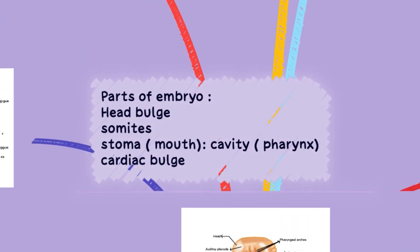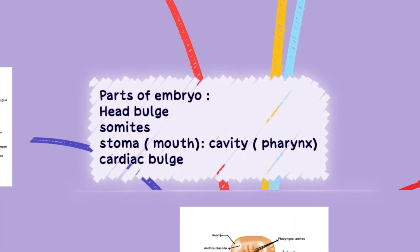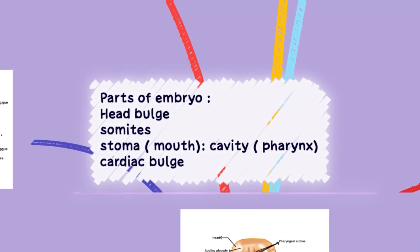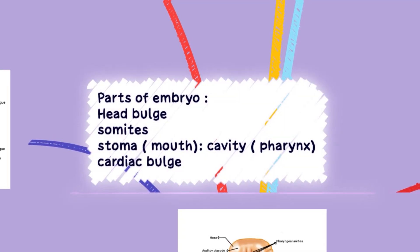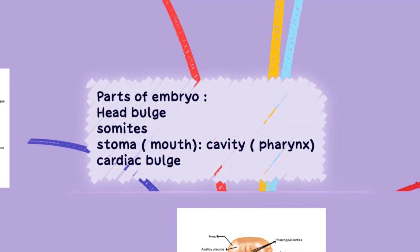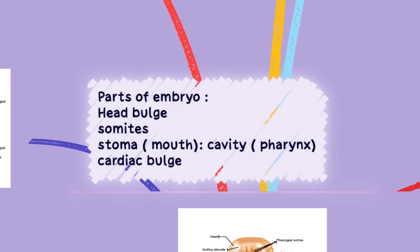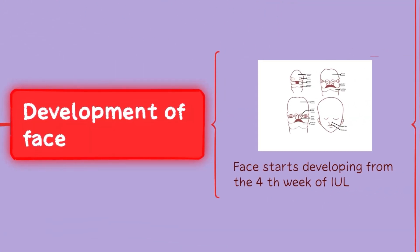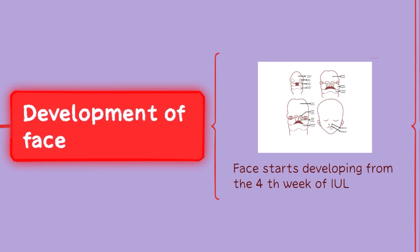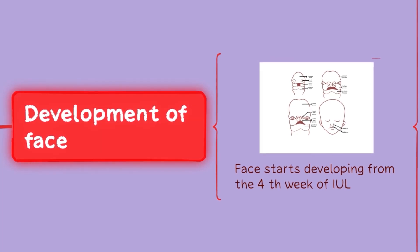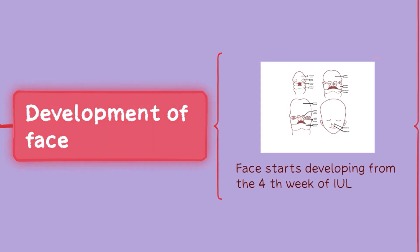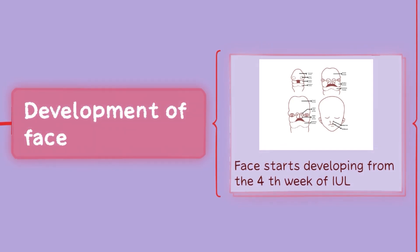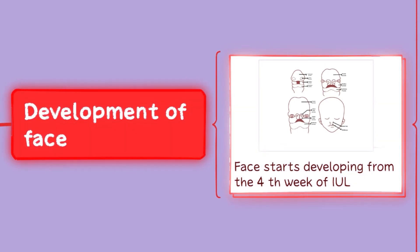An important point to note is that the head bulge, somites, stomodeum or mouth cavity, and cardiac bulge are essential parts of the embryo during development. Coming to an important part — the development of the face — it is a complex process that involves the interaction of multiple facial prominences and tissue growth. Development of the face begins in the fourth week of intrauterine life.